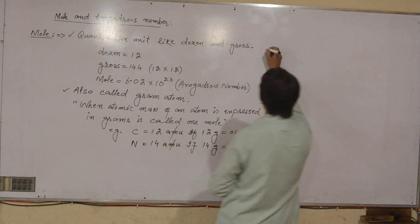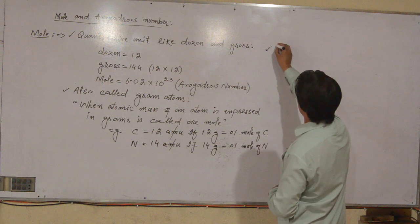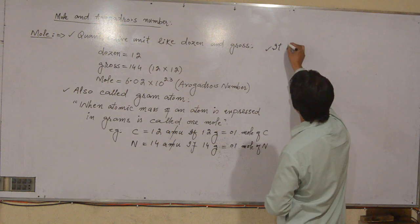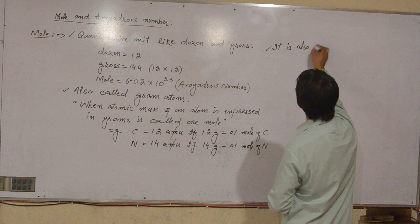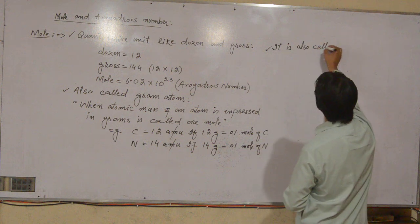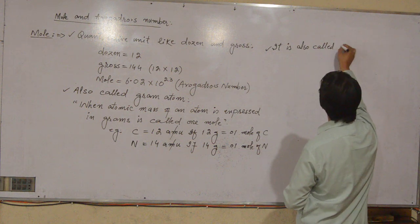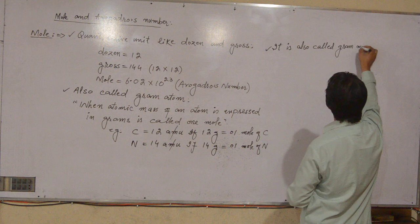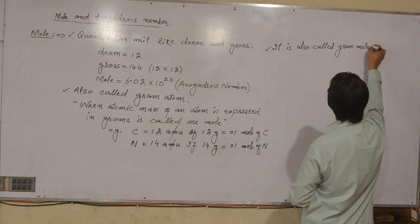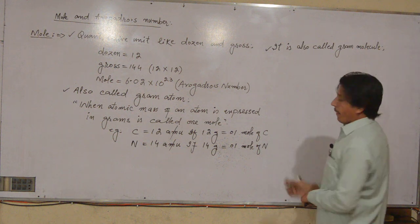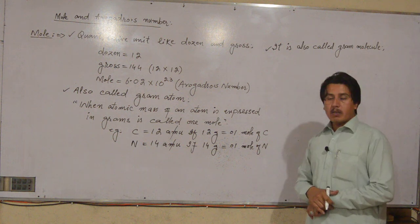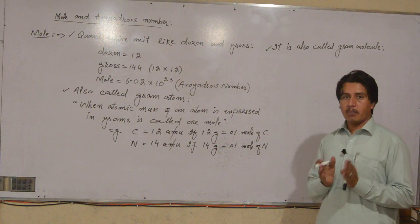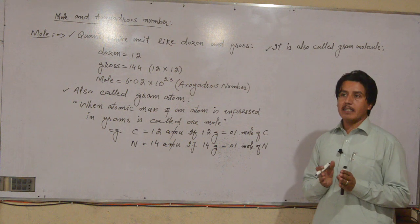The second definition related to the mole: it is also called gram molecule. The gram molecule definition is related to the mole when a molecule's molecular mass is expressed in grams.